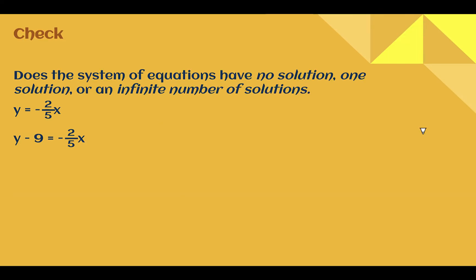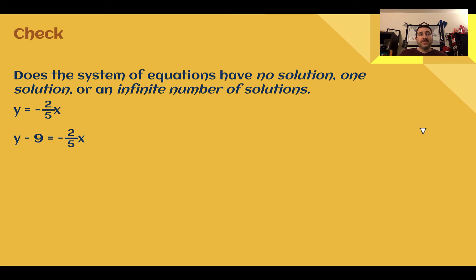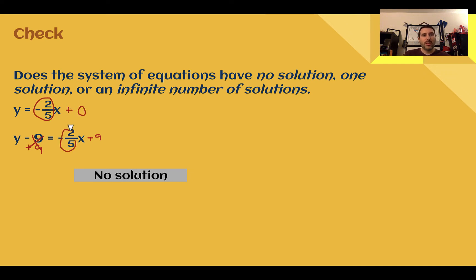Check your understanding: does this system have no solution, one solution, or an infinite number of solutions? Pause the video now and complete the check. Check your answer: this one has no solution. If I add nine to both sides, I end up with slope-intercept form y equals negative two-fifths x plus nine. The other equation has a y-intercept of zero. Same slope, but different y-intercepts — they would be parallel lines. There is no solution.